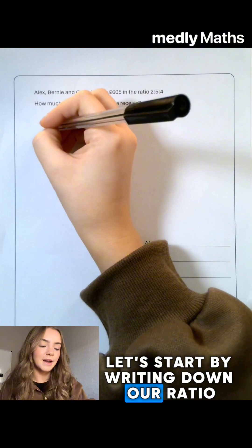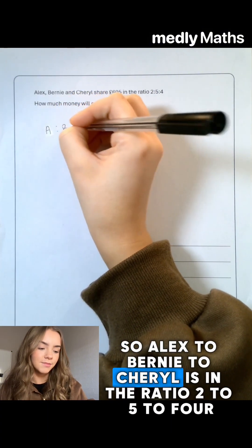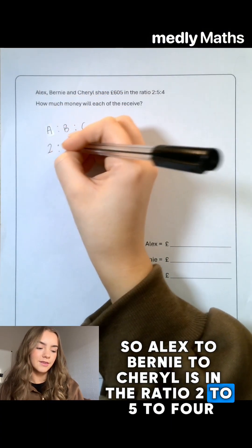Let's start by writing down our ratio. So Alex to Bernie to Cheryl is in the ratio 2 to 5 to 4.